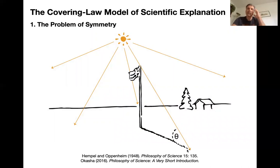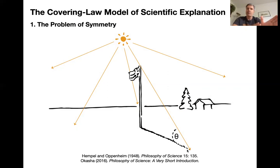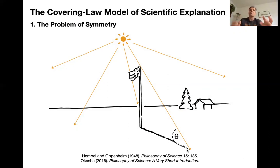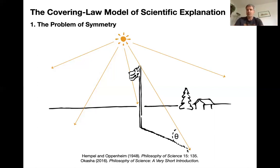But if you think about explanation and causation, what you've done is derived the height of the pole from the shadow — yet what's really happening in nature is that the shadow is caused by the pole. It is the pole that determines the length of the shadow. So there's a symmetry here that is fine in terms of Hempel's account of explanation, but which is definitely not okay if you want a causal explanation of the length of the shadow.